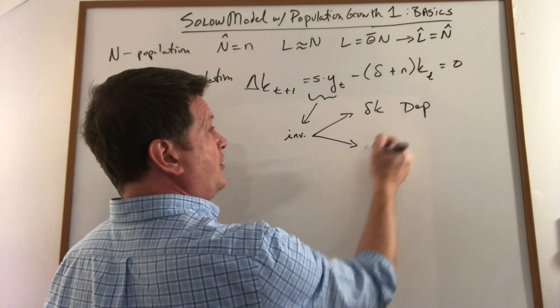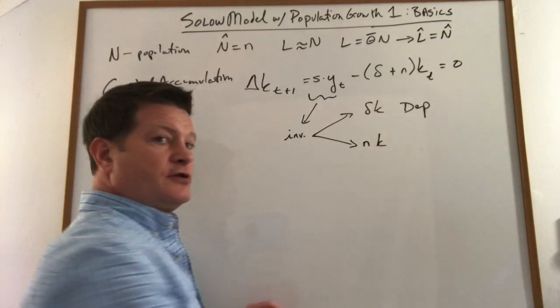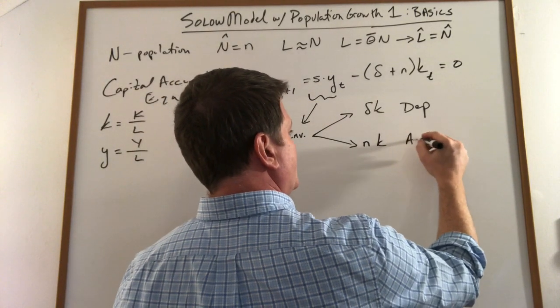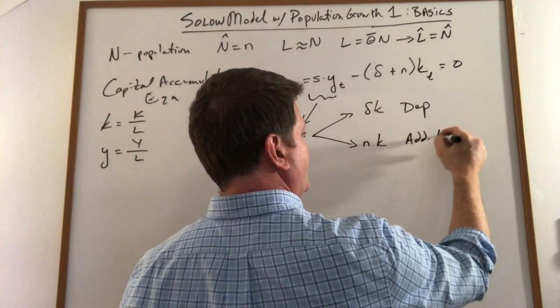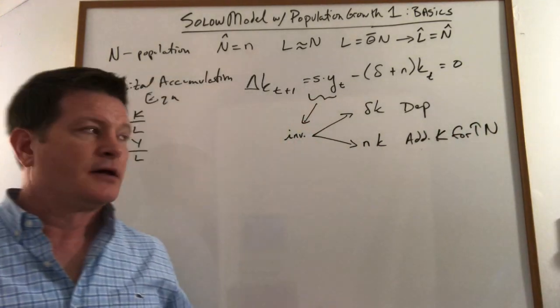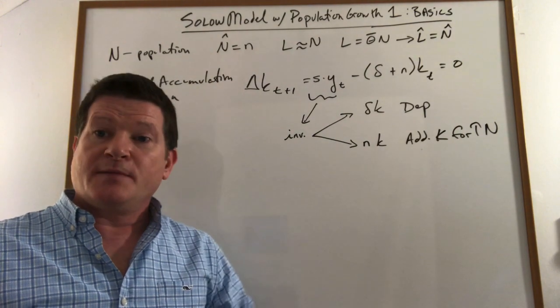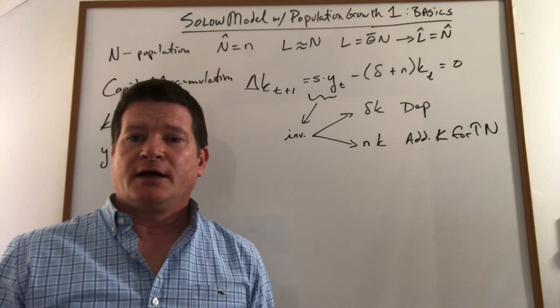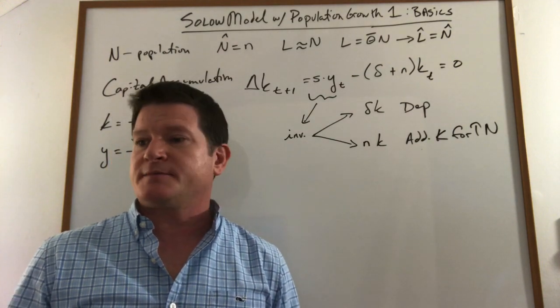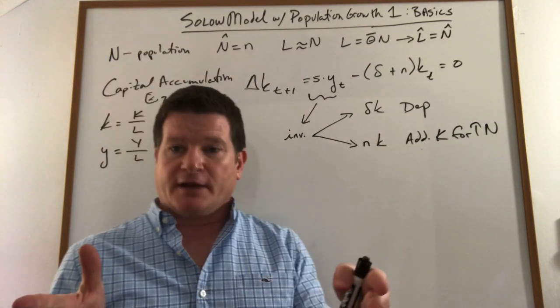You must now also add capital just due to the new people arriving. So additional k for increase N. So the way I like to explain that is if you imagine an office space desks and laptops and chairs and such are your capital equipment. So that building